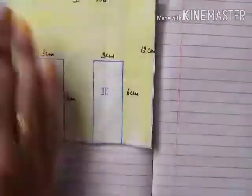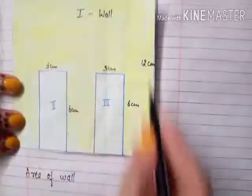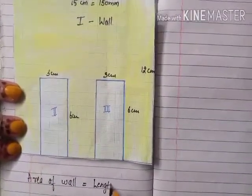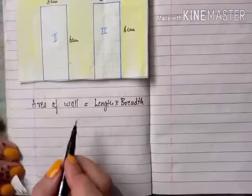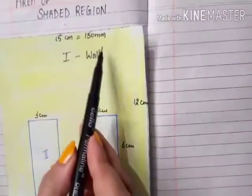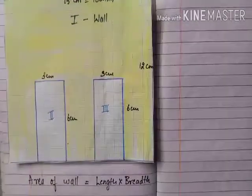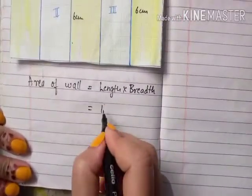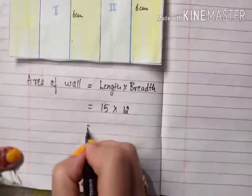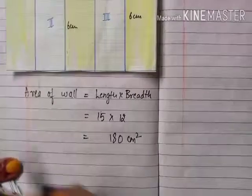To find out the painted area, we should first know the area of the wall. It's a rectangle, so area equals length multiplied by breadth. Make sure your units are the same — if it is 15 centimeters, take the height as 12 centimeters too. So the area of the wall is 15 multiplied by 12: 12 fives are 60 and 12 ones are 12, giving us 180 square centimeters.